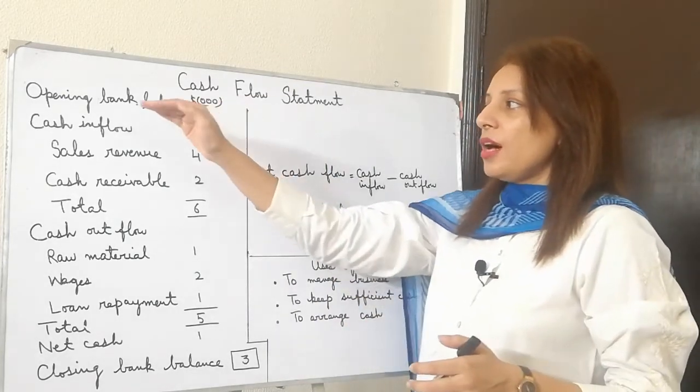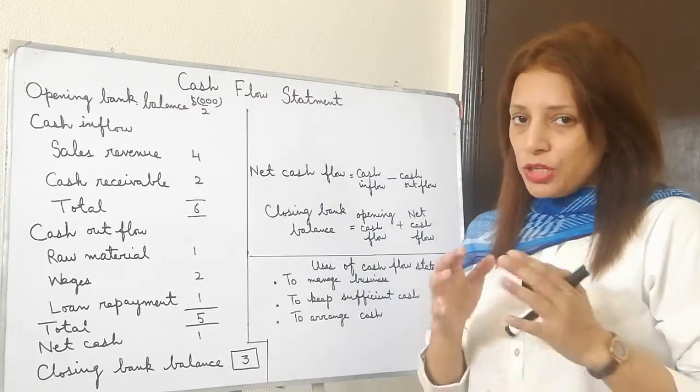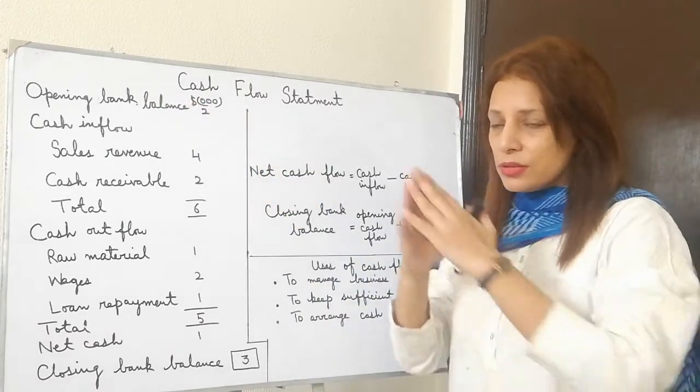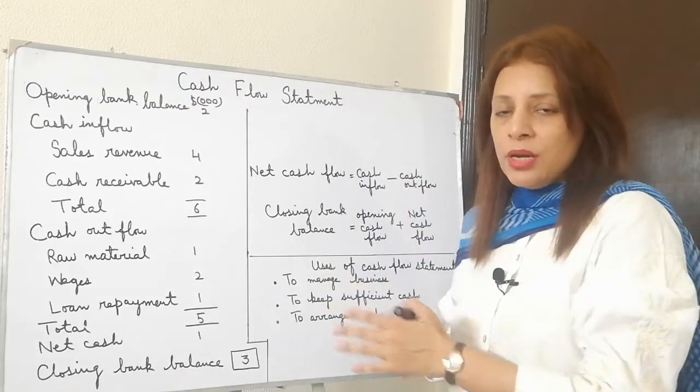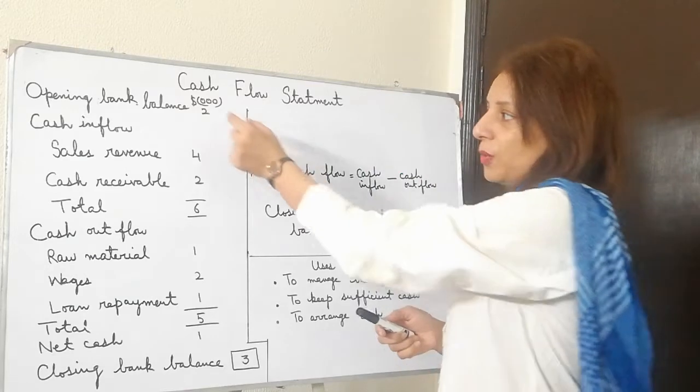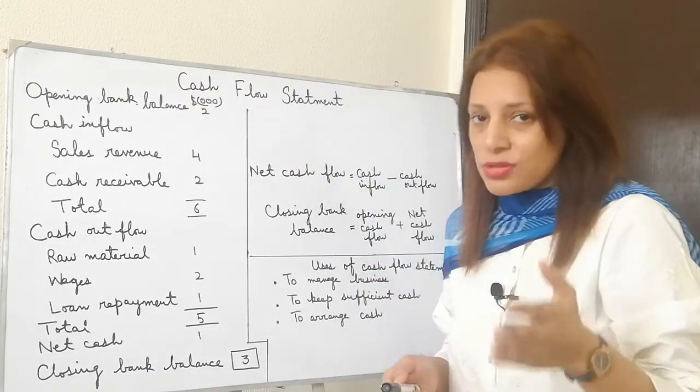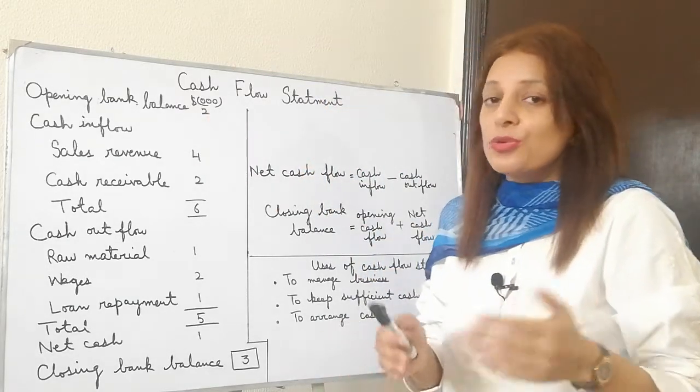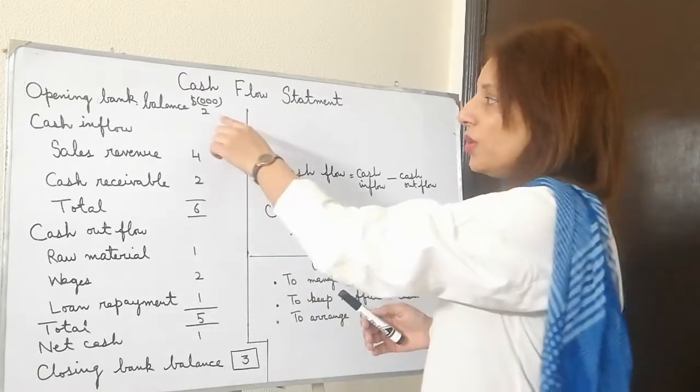First of all we have opening bank balance. This is the balance which you have in your account when you're making this statement. If you make it for March, what is the balance in your account that you will enter here. If you have just started the business and don't have any balance, then you would enter zero here.